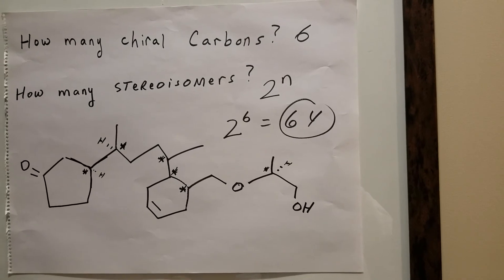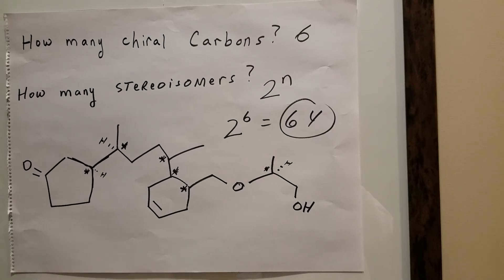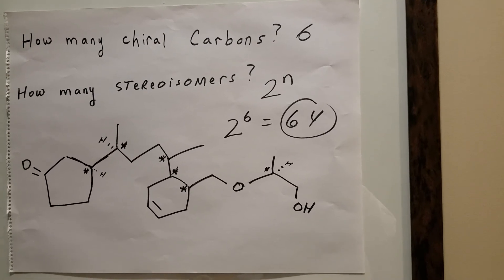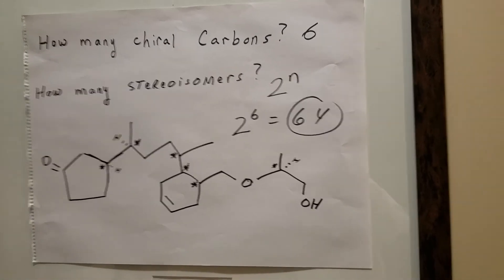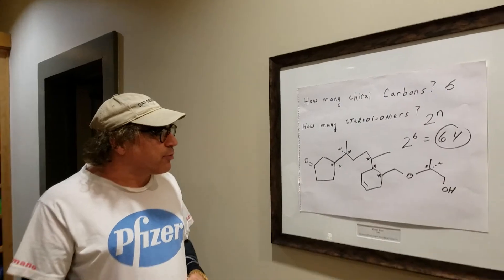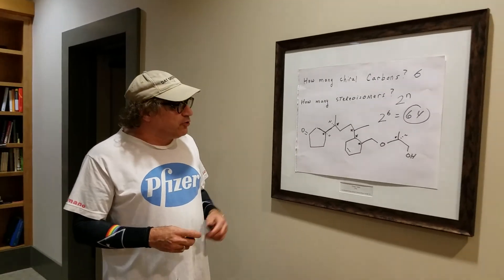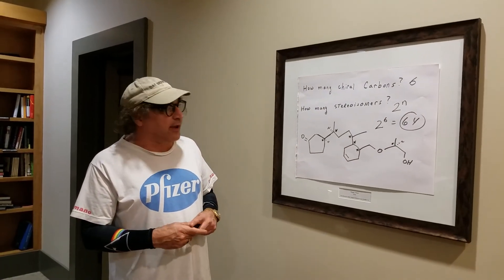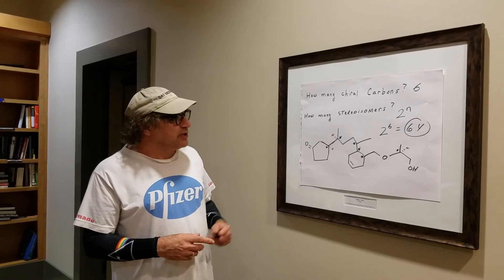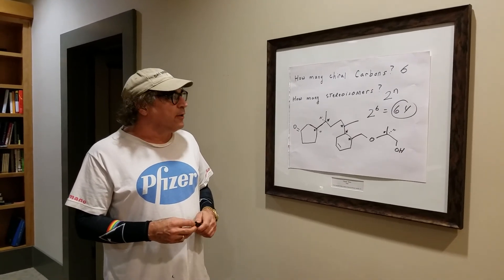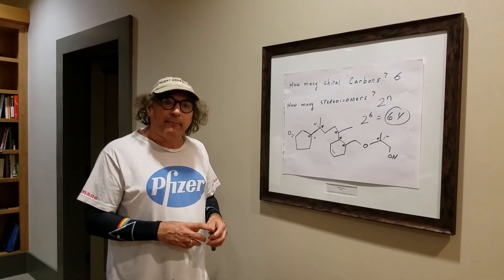And if we ask you the number of constitutional isomers, that would be in the millions — constitutional means the whole skeleton would be changed. I hope this gives you a good idea of how to do a commonly asked problem. If you can do a problem like this, it'll be a piece of cake, so this would be a great practice to put in your toolkit.